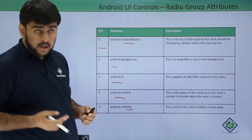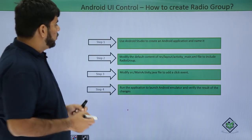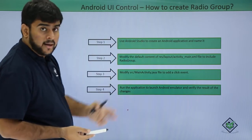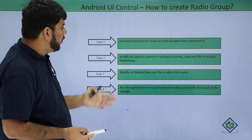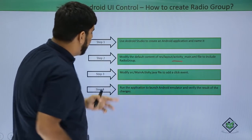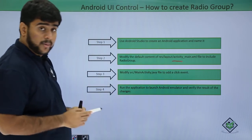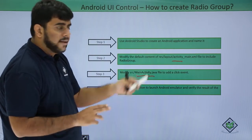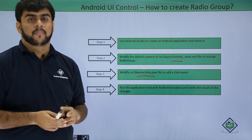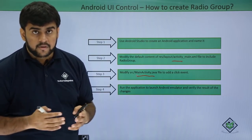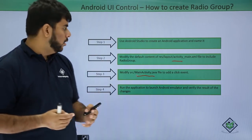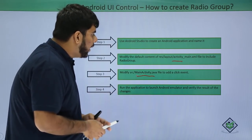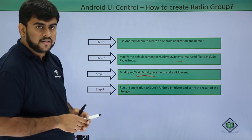Now let's see how we actually make a radio group. I open Android Studio, create a new application and name it. Then I go to my activity_main.xml and include the radio group. After this I go to my Activity.java and add an event that works on the click of a button to capture which radio button in the radio group has been clicked. Then I run the application on my emulator and see the result.